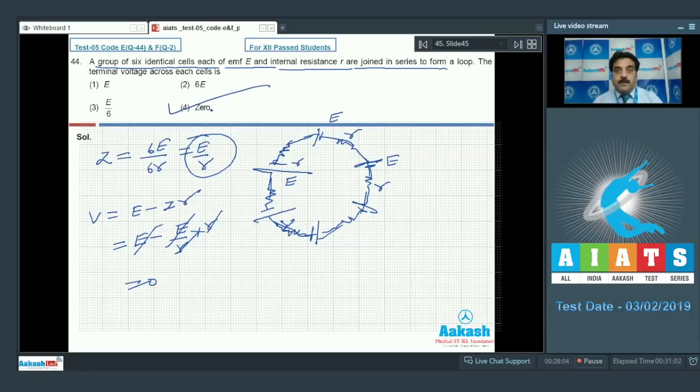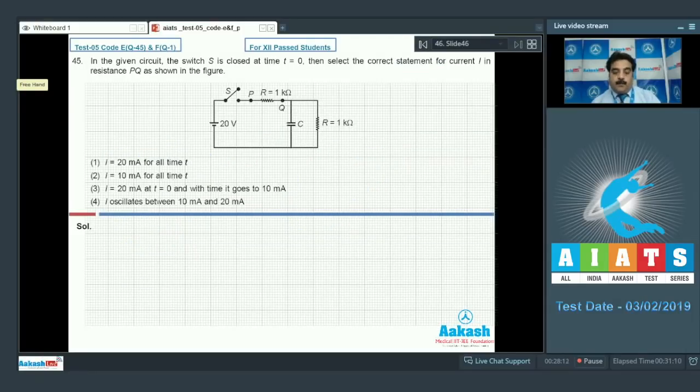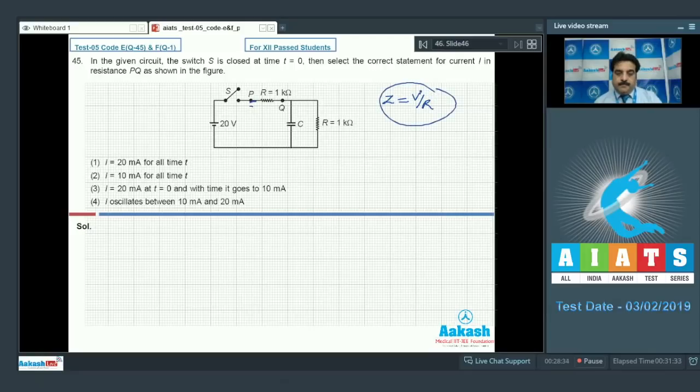Question number 45: in the given circuit, switch S is closed at time t equals 0. Select the correct statement for current I in resistance PQ as shown in the figure. The formula for current is I equals V by R.